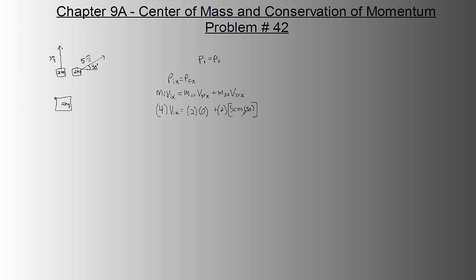And here the x direction velocity is 5 cos 30. And this turns out to be solving for v_i_x. Don't forget to divide by 4 once you're done here. You get 2.17 meters per second.